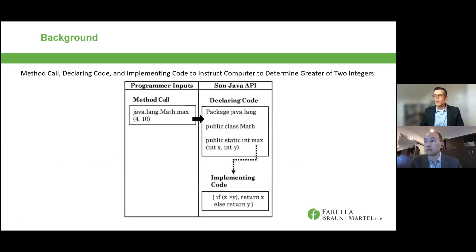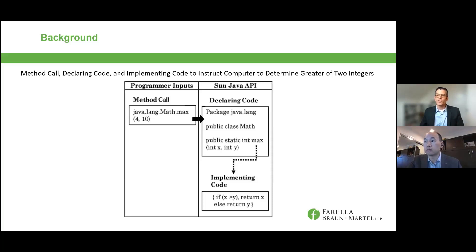Google builds the Android platform. According to the record of the case, 100 different engineers worked for approximately three years and wrote millions of lines of new code. But in the process of that development, they copied about 11,500 lines of application programming interface, or API, code from the Java SE platform. The API is broken into three categories of code. The first is method calls, which is the command language corresponding to a specific task that programmers want the computer to call up and perform. What you see on screen is the example the Supreme Court used in its opinion — the programmer wants the computer to select the larger of two integers, 4 and 10.